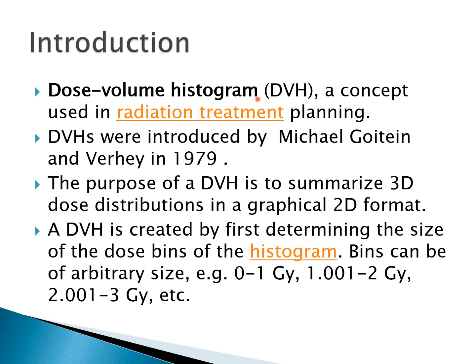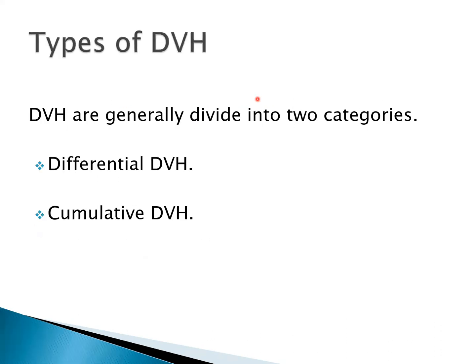A DVH is created by first determining the size of the dose bin of the histogram. Bins can be of arbitrary size, for example: 0 to 1 gray, 1.001 to 2 gray, 2.001 to 3 gray, and so on.